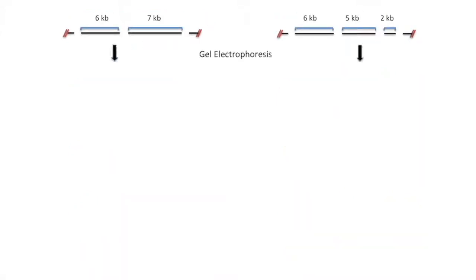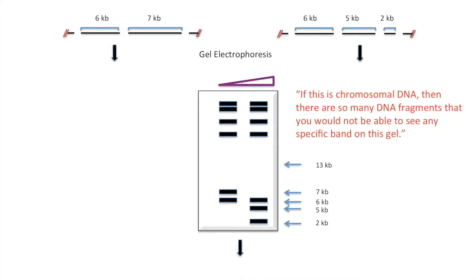So looking at this gel, we are using the same DNA. We are just increasing the time the DNA has been exposed to DNase. On the left, we see bands at 7 and 6 kb from when the DNase initially cuts. However, with enough time, DNase will completely cut the 7 kb fragment at the less sensitive hypersensitive site, leaving us with 5 and 2 kb fragments.